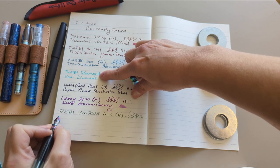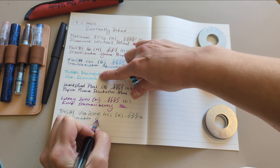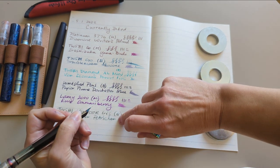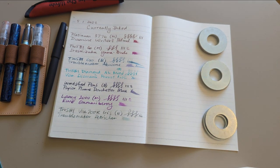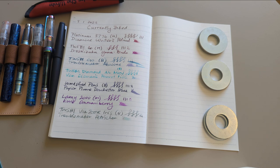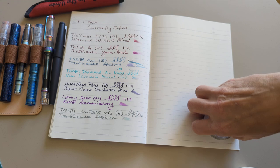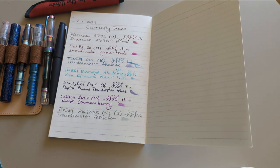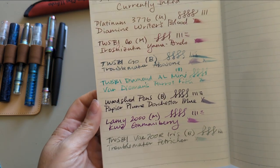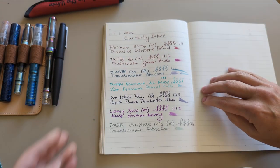And this is Troublemaker Petrichor. So that's all my inks, well, all my currently inked pens.